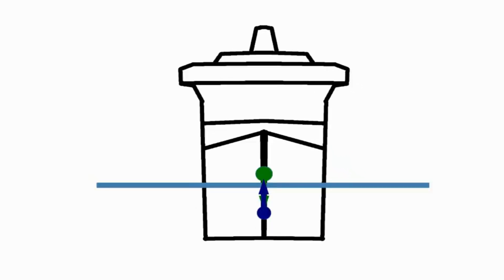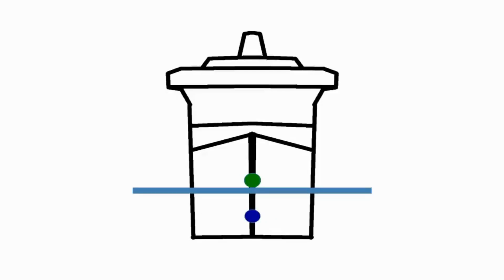But what about another example where it's not an external force but an internal force? In this diagram I've omitted the arrows for the forces for now. The crew are going to put a weight off to one side of the ship — now what effect does this have?